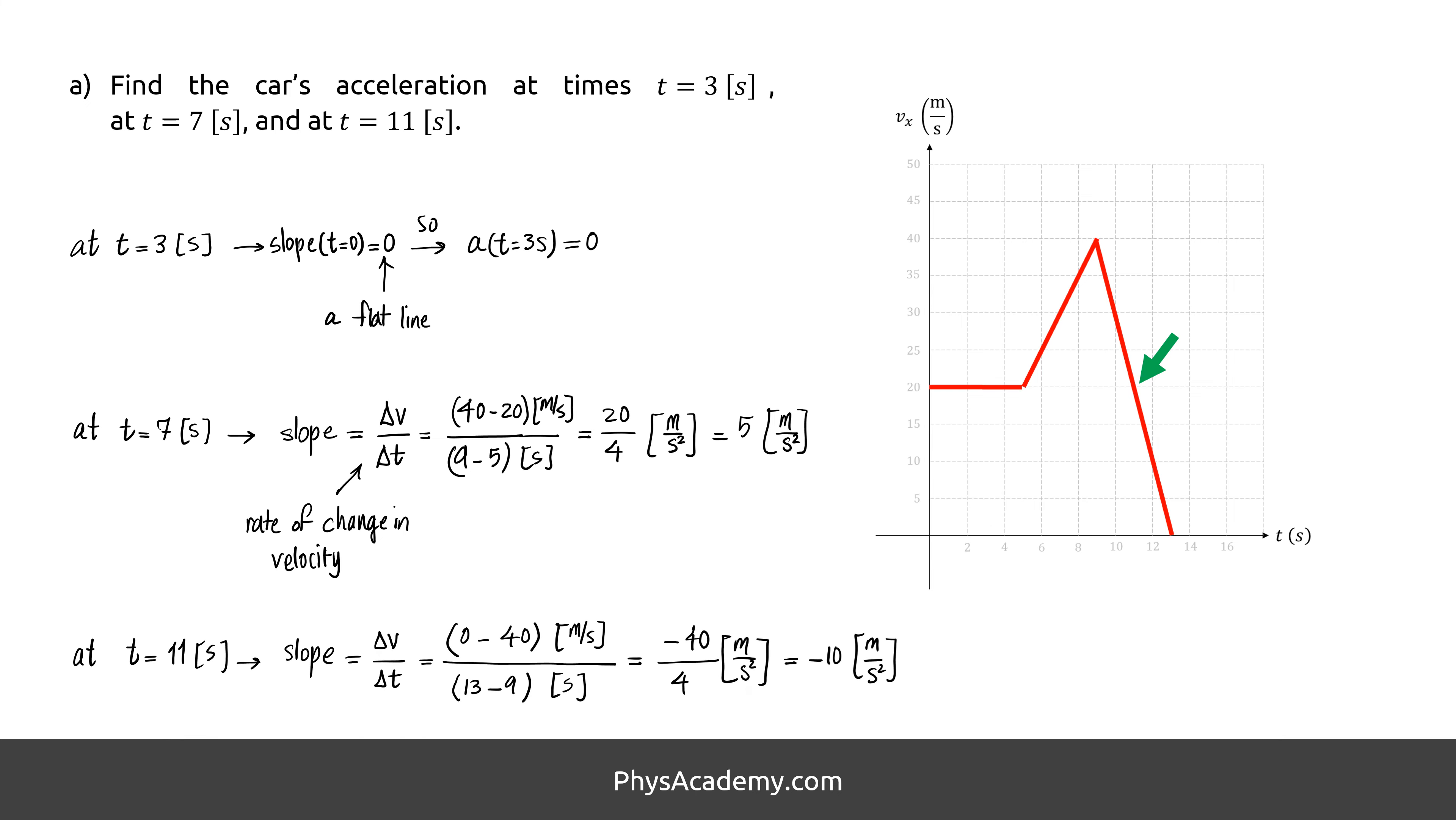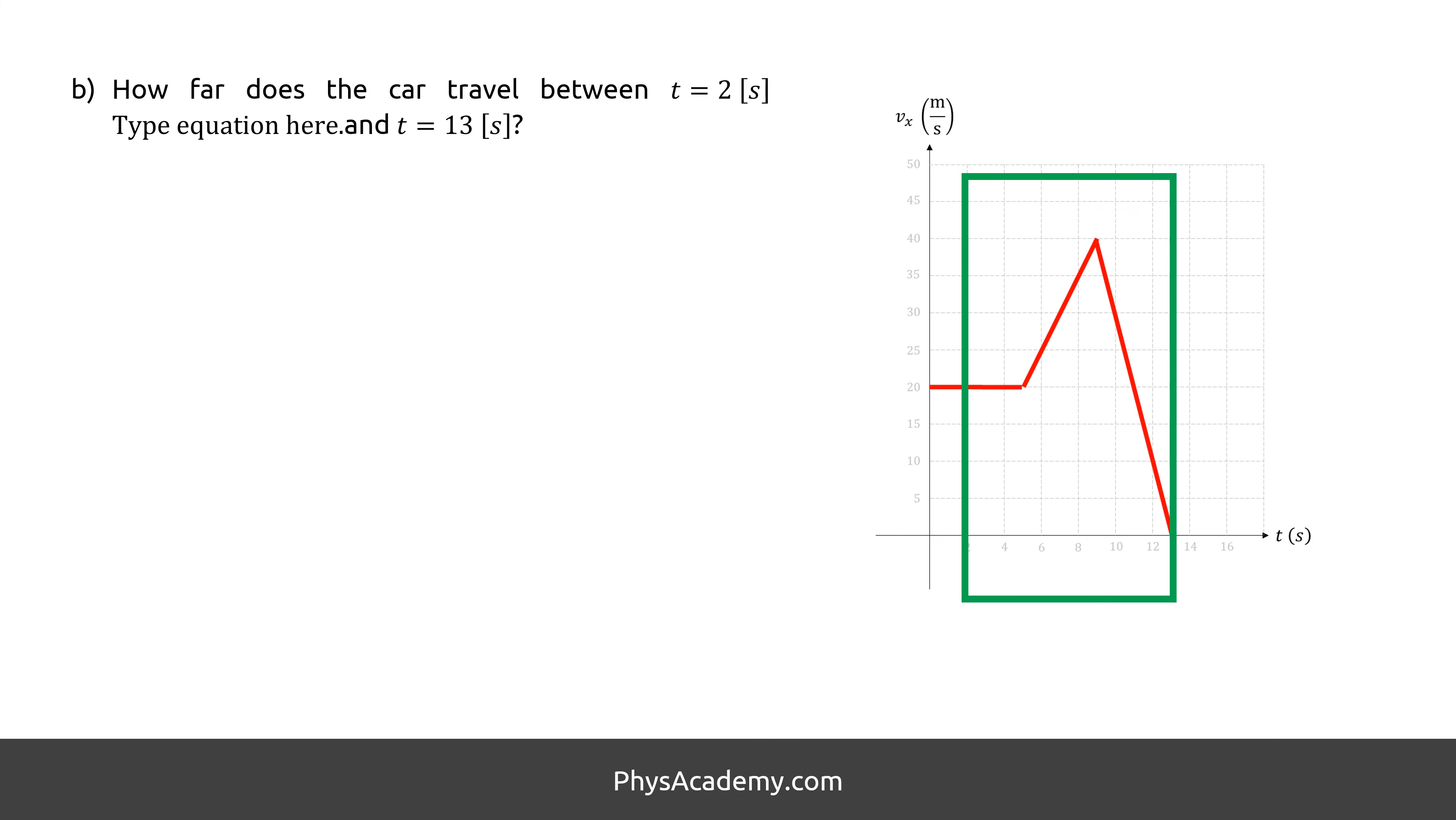After following the same process, but this time between 40 meters per second to 0 meters per second and 9 to 13 seconds, we get minus 10 meters per second squared for the acceleration of this part. We have two methods to find how far the car travels: we could measure the area under the velocity versus time, but this method is slow and can be too inaccurate.